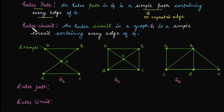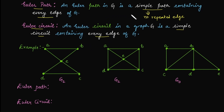There is another term: an Euler circuit. We need to find a simple circuit — meaning no repetition of edges — that contains every edge of the graph. The difference between these two terms is that if a path has different endpoints it is an Euler path, but if the endpoints are the same then that path becomes an Euler circuit.